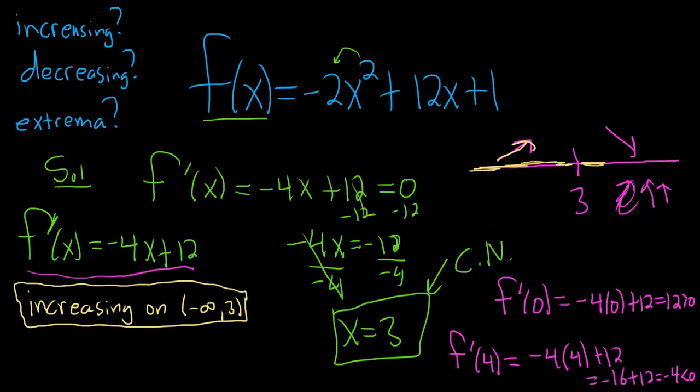And then it's decreasing from 3 to infinity. So decreasing on parentheses 3 comma infinity. That's where it's decreasing.